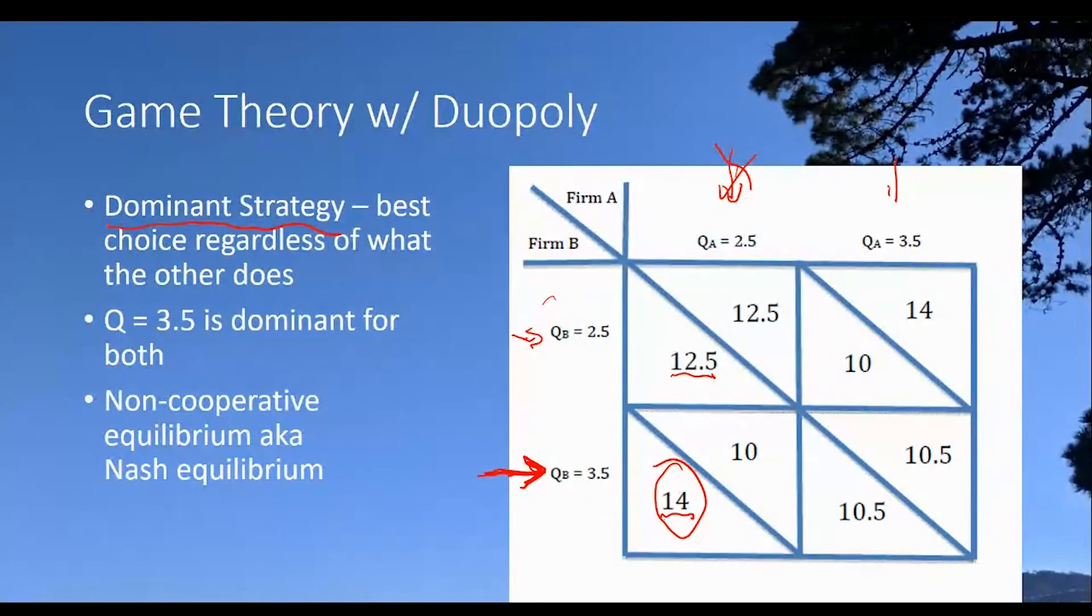Now, let's forget that. Suppose instead, firm A chooses 3.5. We could ask, if that were the circumstance, what's the best thing for firm B to do? Well, now, firm B has to choose between 10 and 10.5 because we're imagining firm A is doing this. Well, 10.5 is the best strategy. It's going to give them the higher profit. It turns out that it doesn't really matter what firm A does. The best choice for firm B is going to be to set a quantity of 3.5. And for that reason, it is the dominant strategy for individual B.